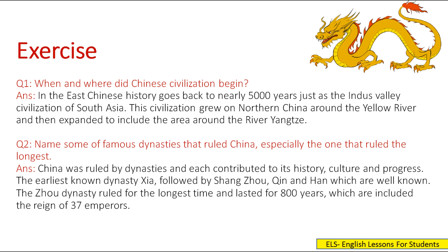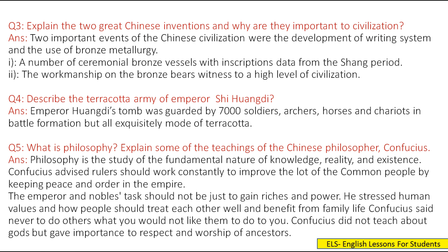Question 2: Name some famous dynasties that ruled China, especially the one that ruled the longest. Answer: China was ruled by dynasties, each contributing to its history, culture and progress. The earliest known dynasty is the Xia, followed by the Shang, Zhou, Qin and Han. The Zhou dynasty ruled for the longest time, lasting over 800 years with the reign of 37 emperors. A number of ceremonial bronze vessels with inscriptions date from the Shang period, and the workmanship on the bronze bears witness to a high level of civilization.